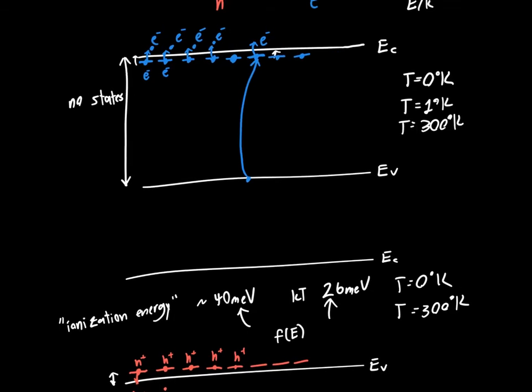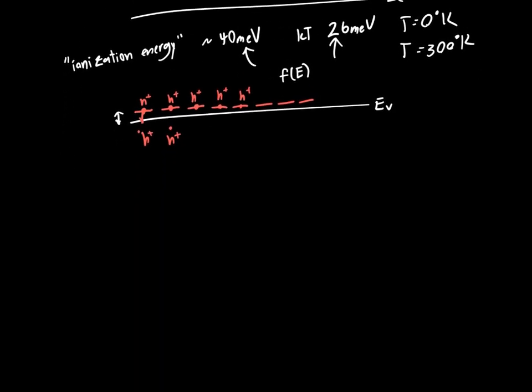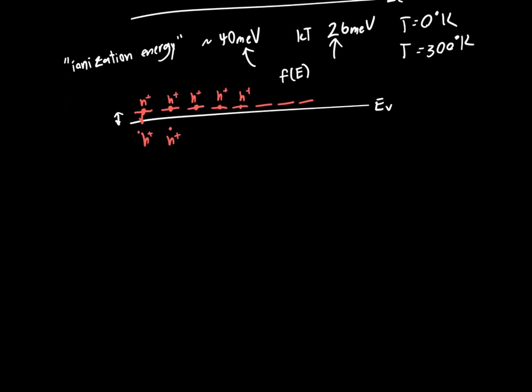Now, I've been sort of alluding to this Fermi energy in the equations that we've used. So in the Fermi-Dirac distribution and now in the concentration equations for electrons and holes. And we haven't really talked much about the Fermi energy or how it's affected by doping or what it really means.